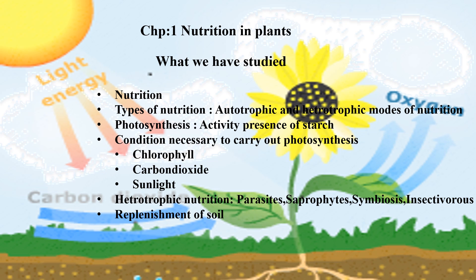We have seen about symbiosis, that is a mutually beneficial relationship for both organisms. Lastly we have seen about insectivorous plants, which are dependent on insects to fulfill their nitrogen requirements. And at the end of the chapter we have seen how the soil gets replenished with all the nutrients which are required.